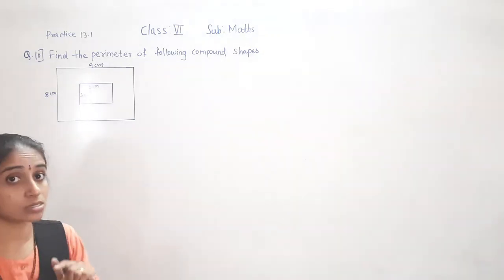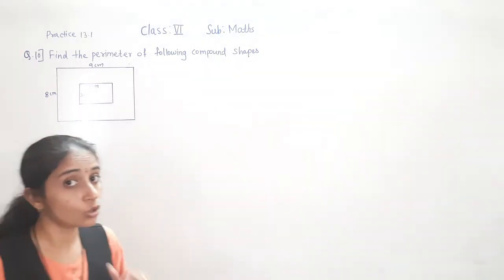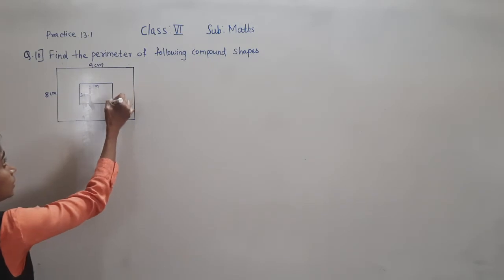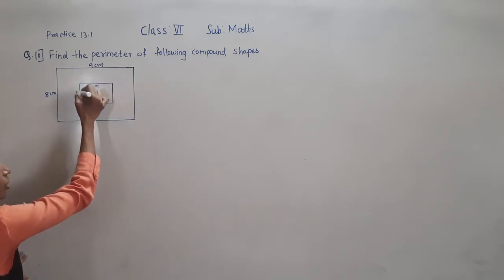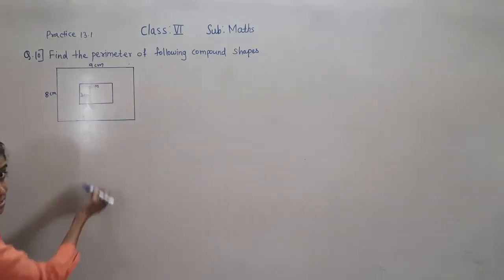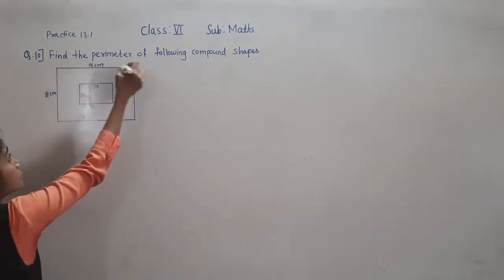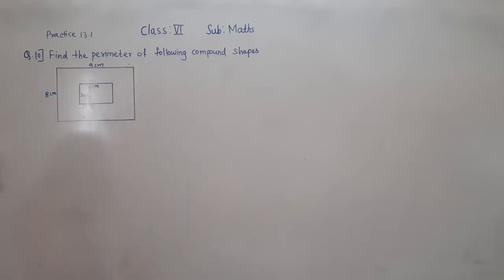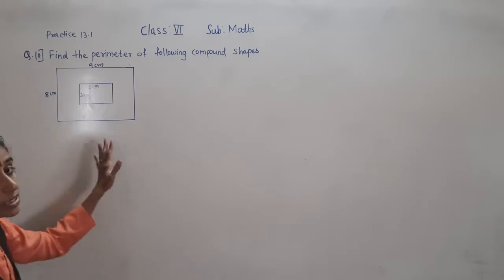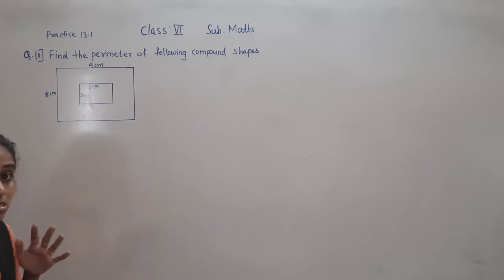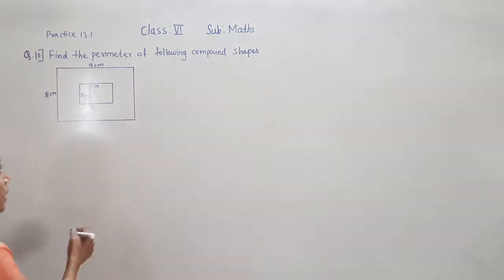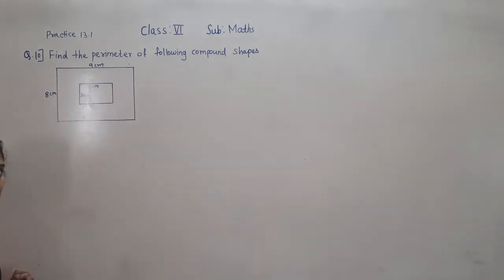Perimeter is the distance around the closed figure. This is also a closed figure, so we have to find the perimeter of this rectangle as well. This is also a closed figure, so we have to find the perimeter of this rectangle also. So let's find the perimeter of the inside rectangle.